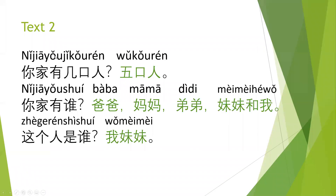Text 2. 你家有几口人？— How many people are in your family? 五口人 — Five people. 你家有谁？— Who is in your family? 爸爸，妈妈，弟弟，妹妹和我。这个人是谁？— Who is this person? 我妹妹 — My younger sister.